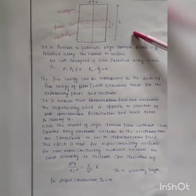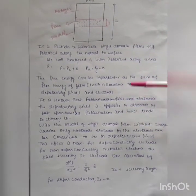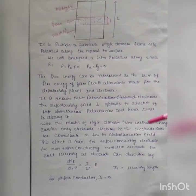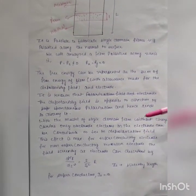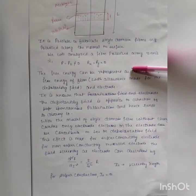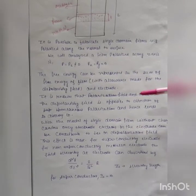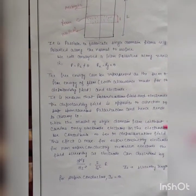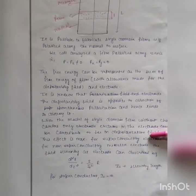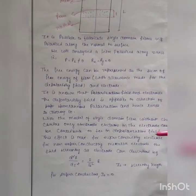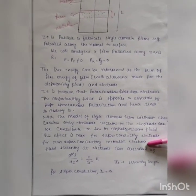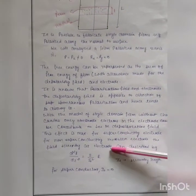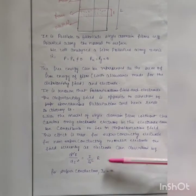With the model of a single-domain film, without free charge carriers, only electrons in the electrodes can contribute to decreasing the depolarization field. This effect is maximum for superconducting electrodes, because here electrons work to reduce the depolarizing field. For non-superconducting metallic electrodes, the field screening at electrodes can be described by d²E/dz² equals E over IS², where IS is the screening length.